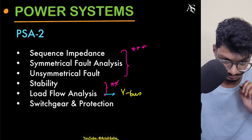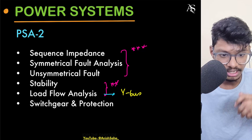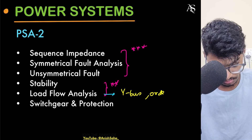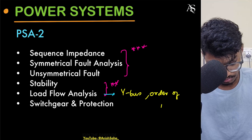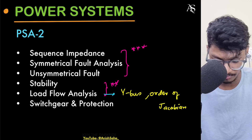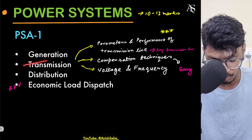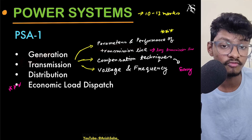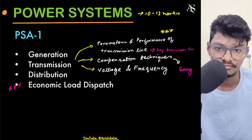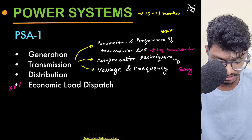For stability, the equal area criterion is very very important. Also study the order of the Jacobian and Newton-Raphson method — these topics are very important. You can skip switching and protection, but all other PSA2 topics are critical. In PSA1, focus on parameters and performance of long transmission lines, compensation techniques, and voltage and frequency control.